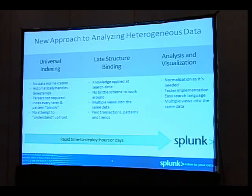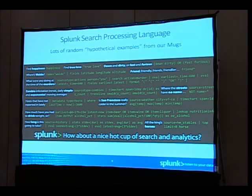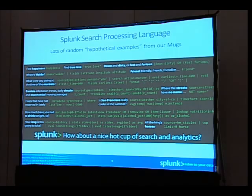We allow you to visualize this in our web-based user interface, making it fairly easy to deploy Splunk in hours or days rather than weeks or months. Here's an eye chart showing some of our search language. At its simplest, it looks like a Google search — type a word like 'happiness' to find events containing it, or wrap a phrase in quotes to find 'true love.' You can also graph data over time, such as finding the distinct count of IDs over time — like a zombie infestation trend.